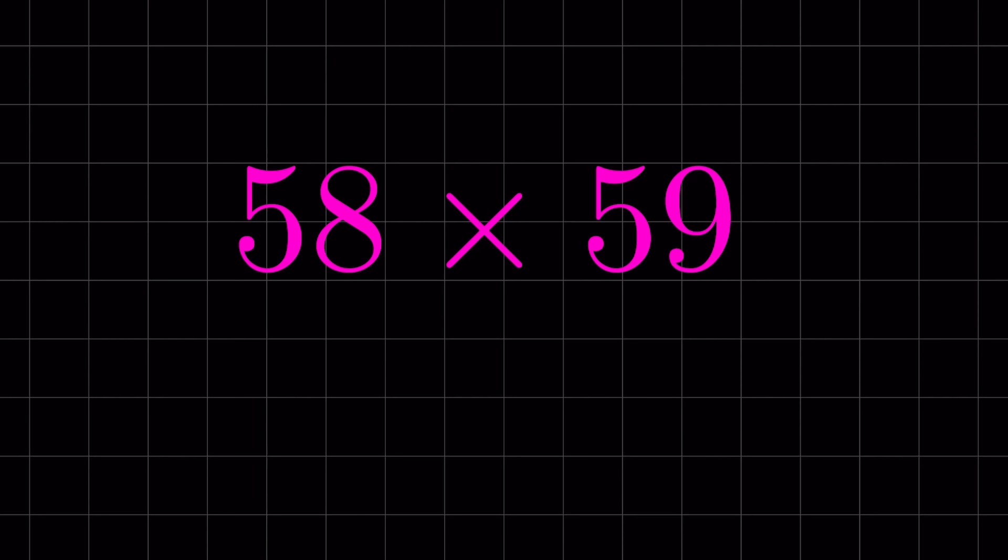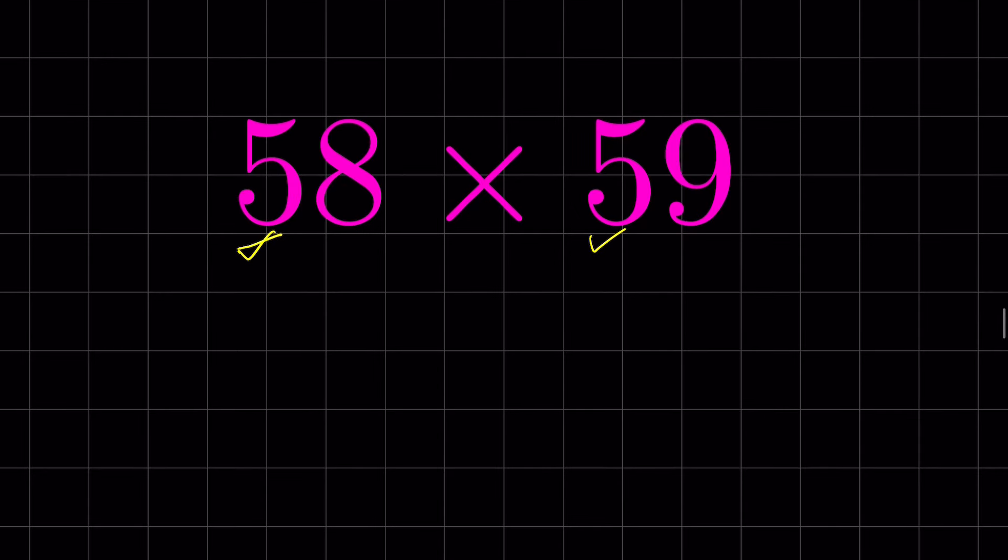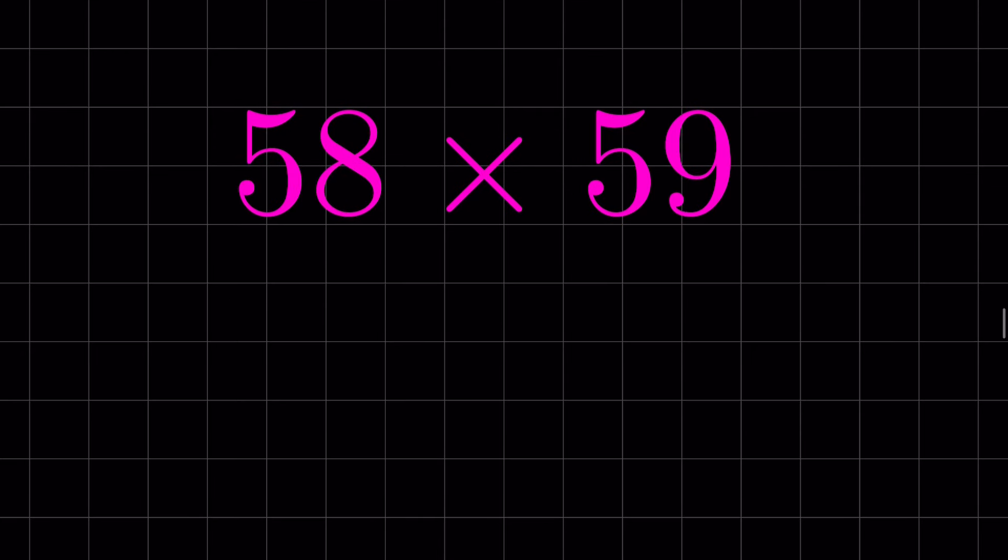58 times 59. How to multiply these two digit numbers whose tens place number is the same? Here it is 5. Can you find the result in few seconds without using pen and paper? It's very easy. Let me share that trick with you.